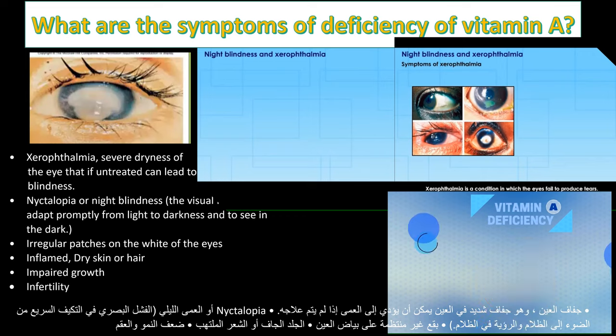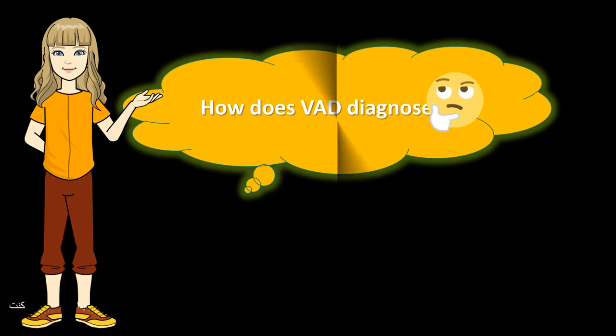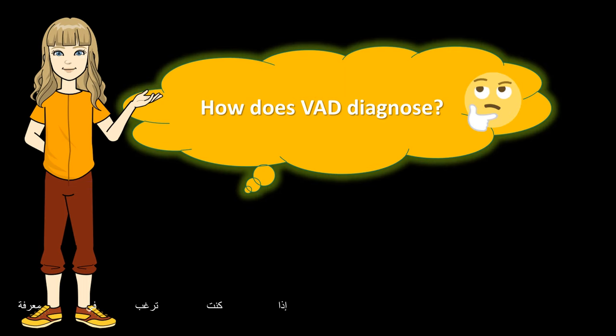Other symptoms include irregular patches on the white of the eyes, inflamed dry skin or hair, impaired growth, and infertility.